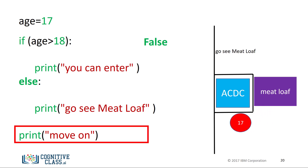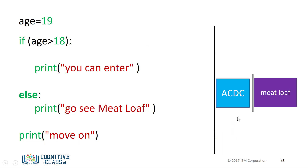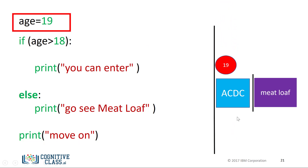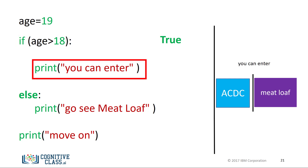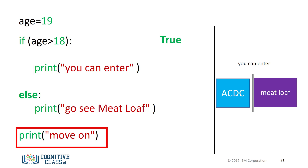The program will then continue running. For the case where the age is 19, we set the variable age to 19 and check the if statement. The statement is true. Therefore, the program will execute the statement to print 'you will enter'. The program skips the expressions in the else statement and continues to run the rest of the expressions.